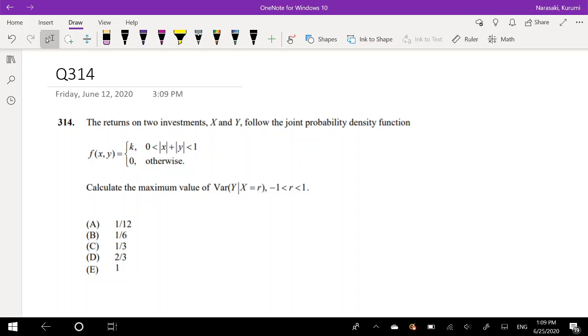This question asks, the returns on two investments, x and y, follow joint probability distribution function given by this. Calculate the maximum value of variance of y, given x is equal to r.